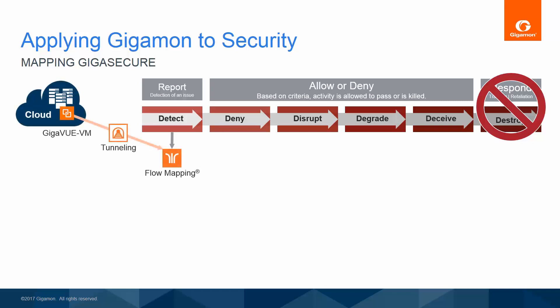For out-of-band detection and reporting, copies of passing packets are provided to tools so that each tool receives traffic for which it is optimized to provide inspection services. Selected packets can be sent for net flow generation and metadata, allowing tools to screen larger segments of the network efficiently or to augment deep packet inspection.